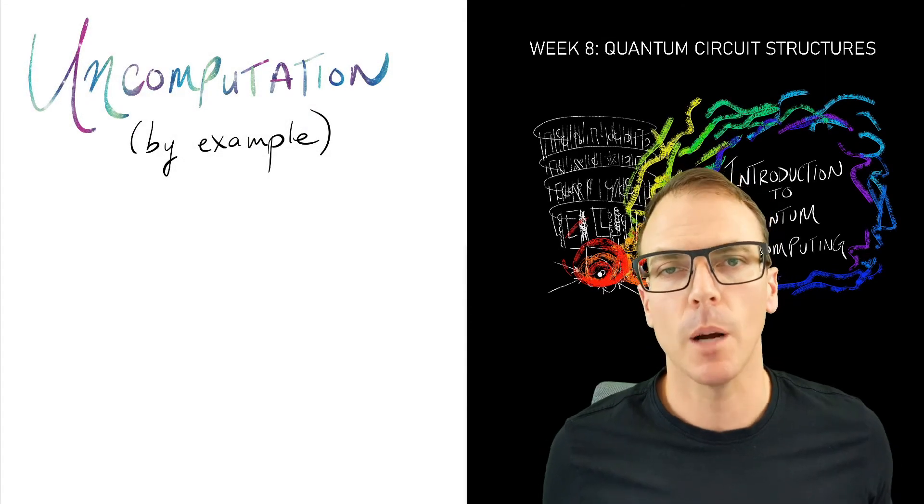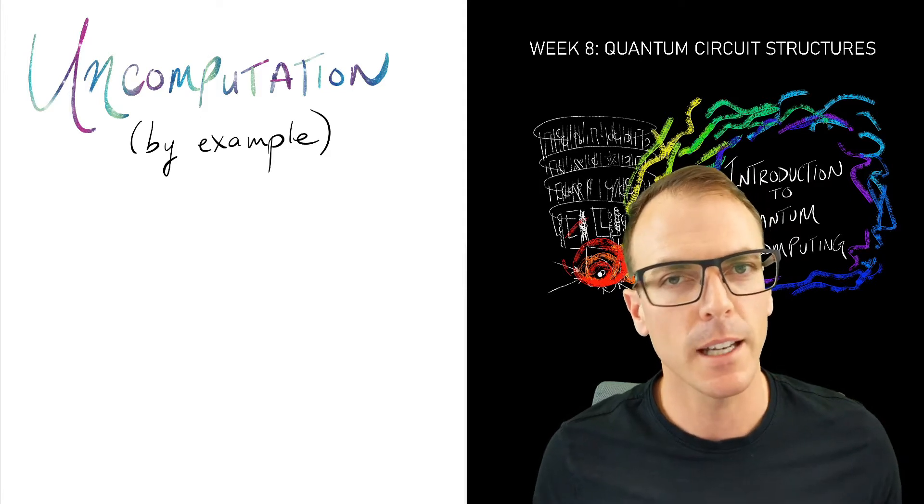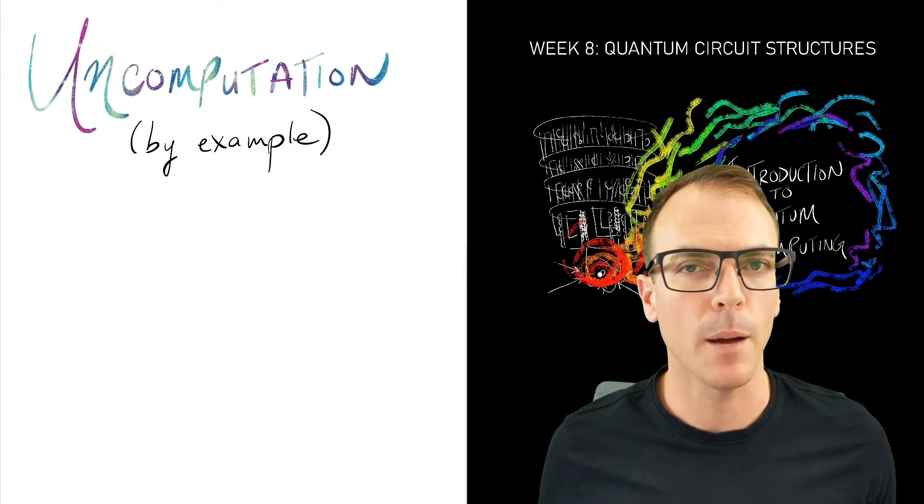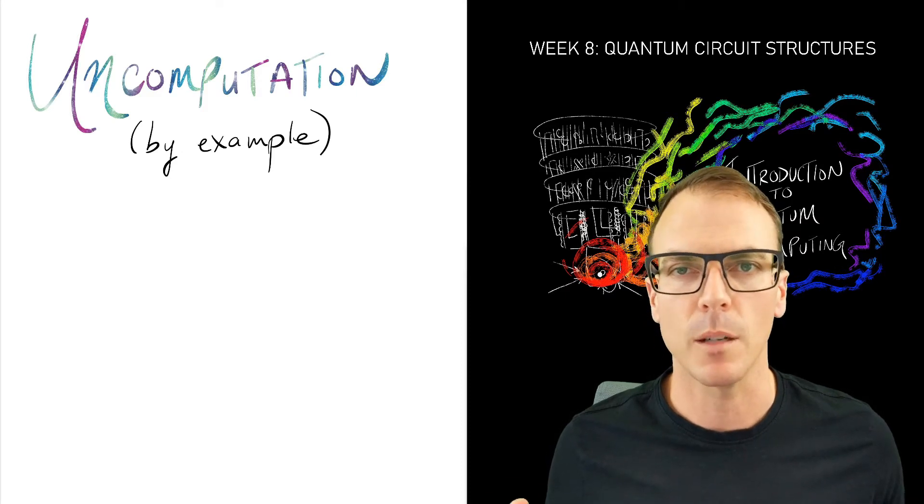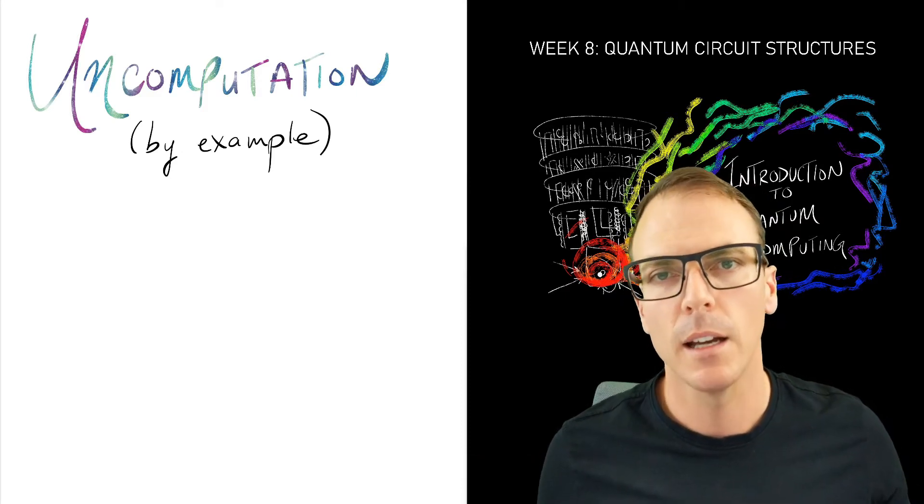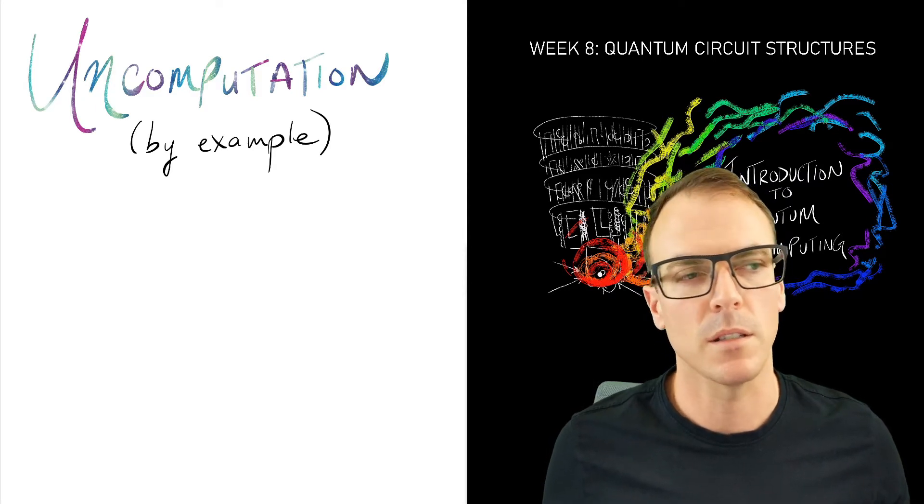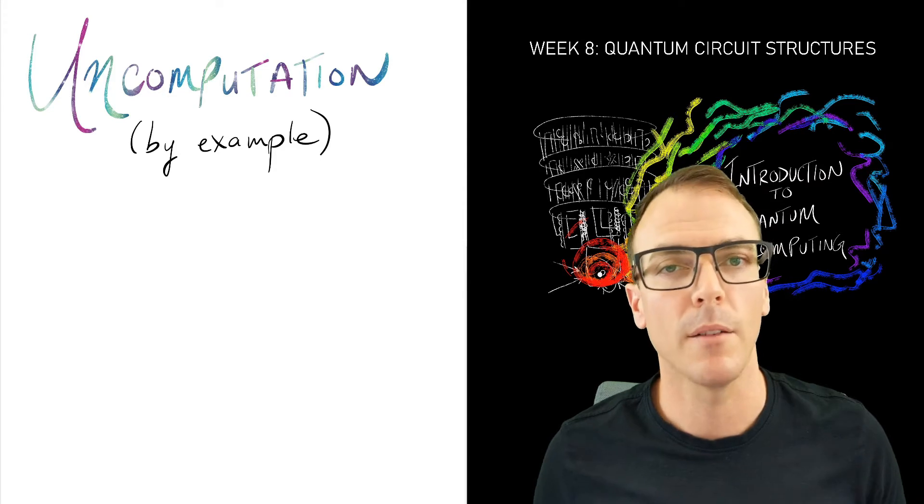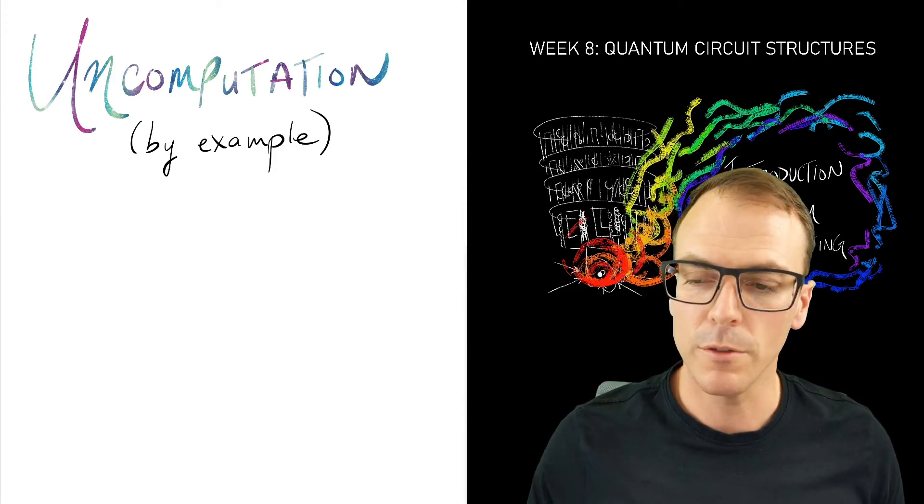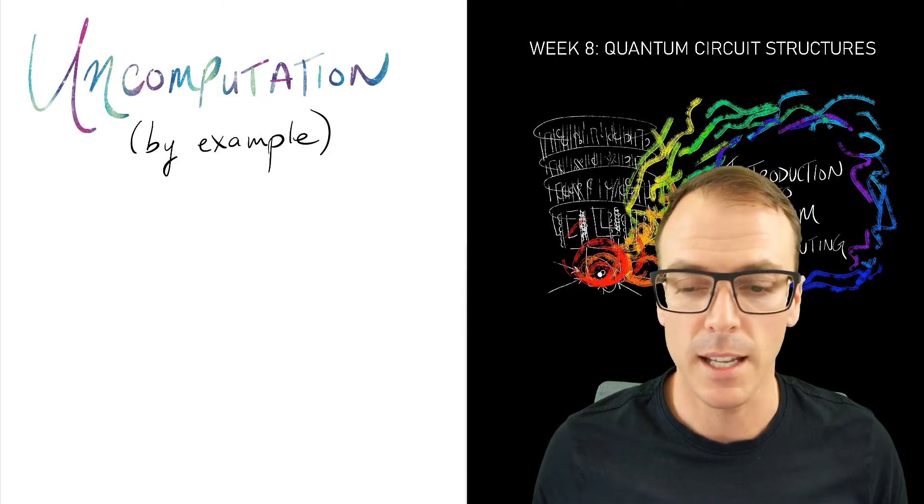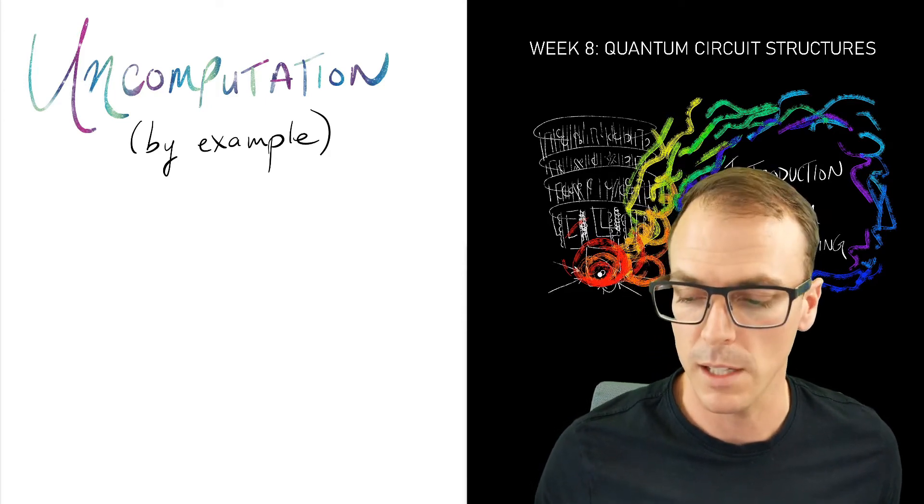When we perform these digital logic operations in superposition, we create a lot of entanglement. And if we perform a measurement at that point in our circuit, we're going to get some random answers because of this entanglement. We can't just throw away garbage qubits that we don't want because they are entangled with the qubits that have the answer encoded within them. So to fix this, there is a technique called uncomputation, and we're going to do a simple example to see how that works.